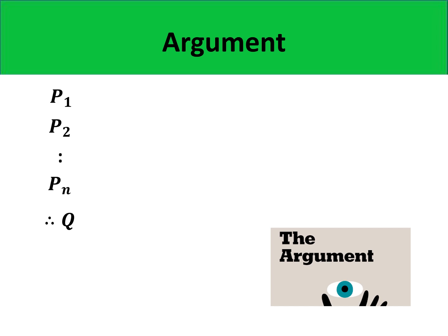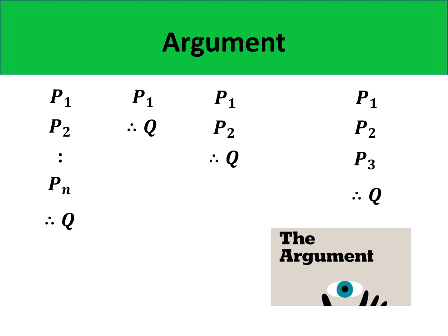So if an argument has only one premise, then we write it as follows. If an argument has two premises, it is written in this manner. And if an argument has three premises, we write it as follows.